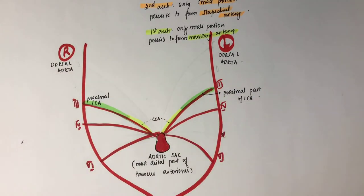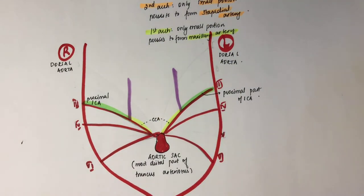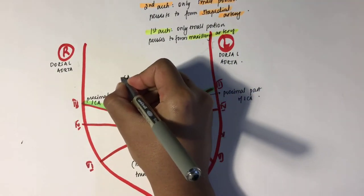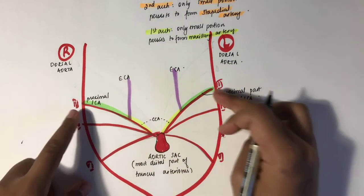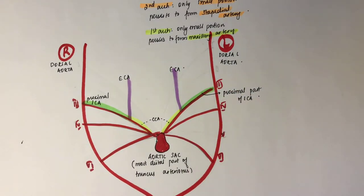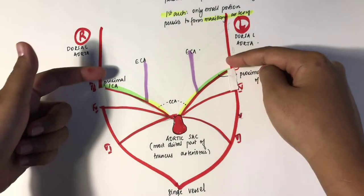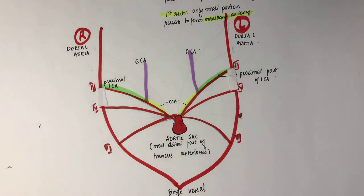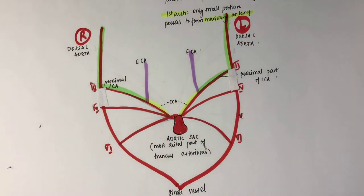The external carotid artery arises as a sprout from the third aortic arch — it's not a continuation of the arch but arises separately from it. The dorsal aorta between the third and fourth arch disappears, and the distal internal carotid artery is formed from the cranial portion of the remaining dorsal aorta.